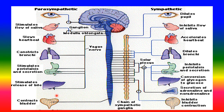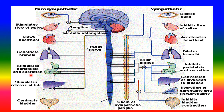The parasympathetic nervous system stimulates flow of saliva, slows heartbeat, constricts bronchi in the lungs, stimulates peristalsis and secretion, and contracts the bladder. So, the sympathetic and parasympathetic nervous systems play a vital role in controlling the behaviour of the human body and the functions of each organ.